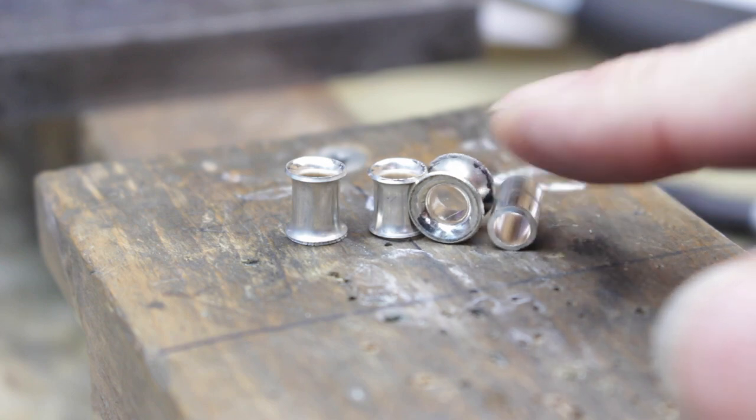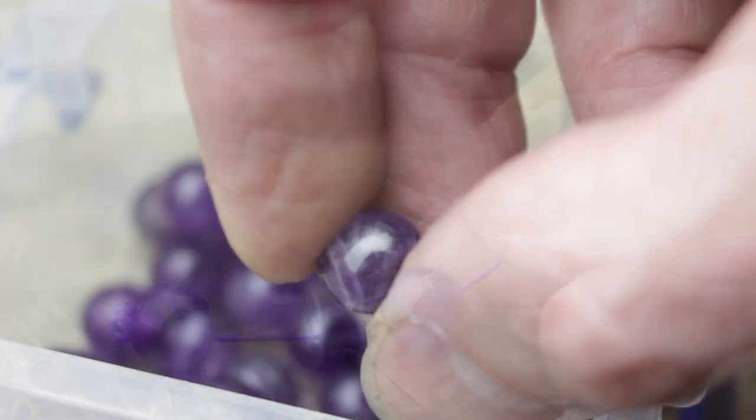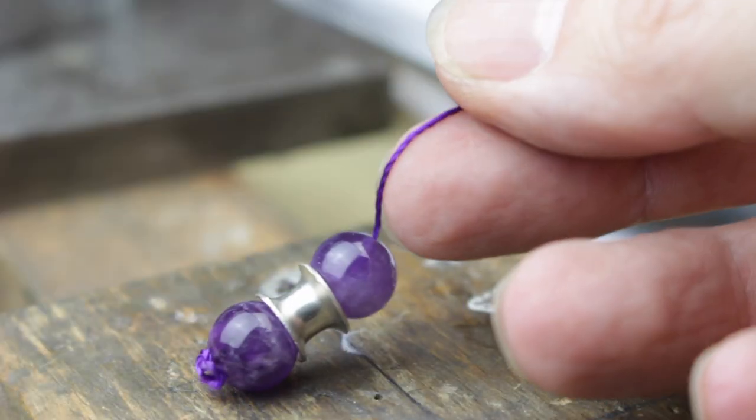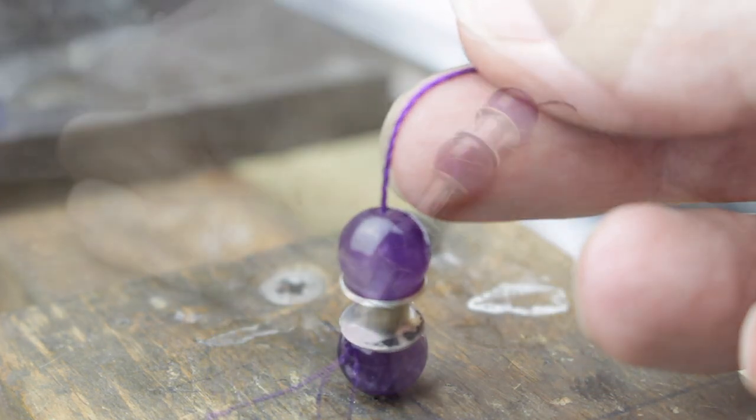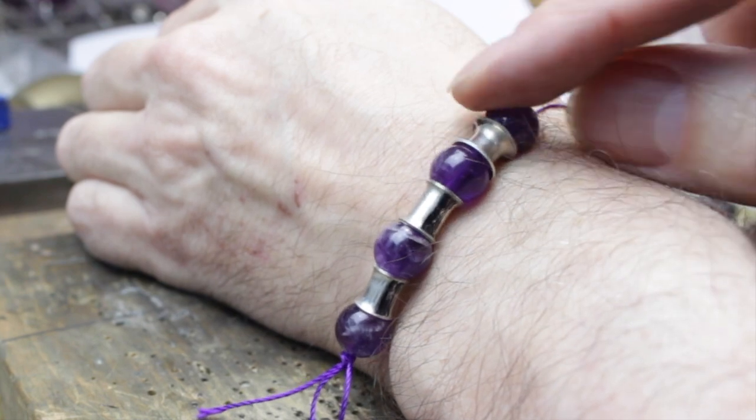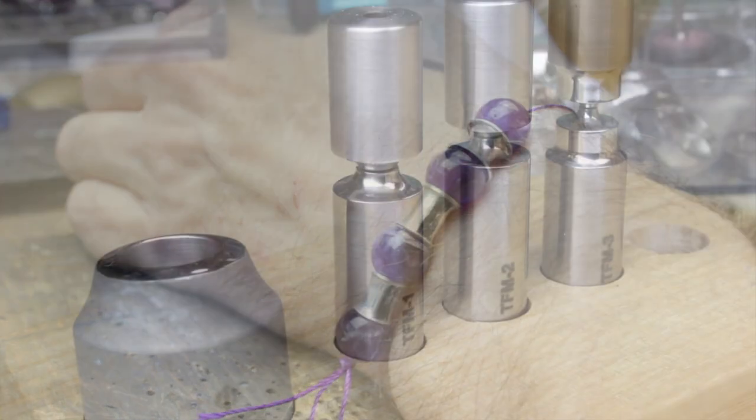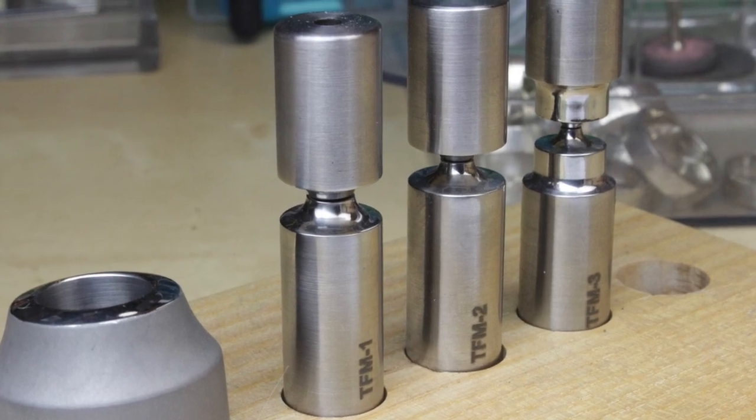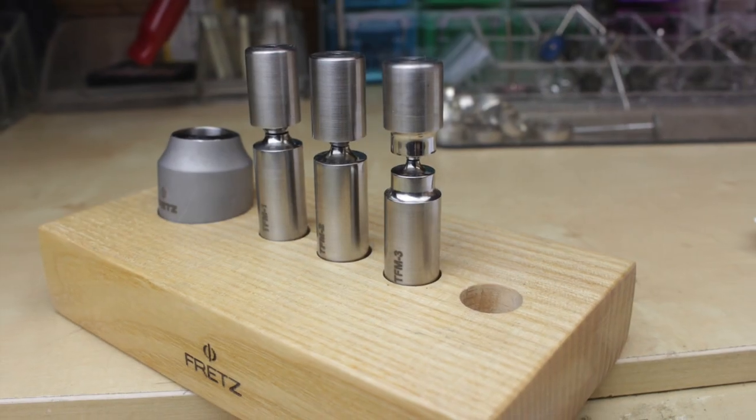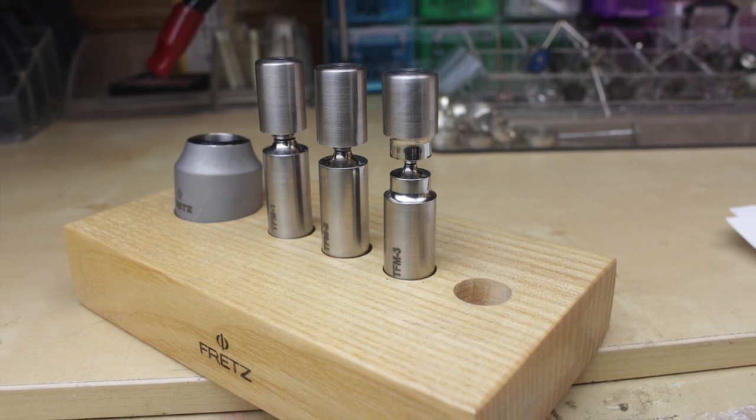So play around with different lengths, thicknesses, and diameters. Try mixing them with soldered jump rings and wire, possibly even making little tiny spinner beads. There are so many possibilities. I hope I've inspired you. Check out pepetools.com for the latest deals on this and other FRET's tools. I've been Dave Wilson. Thanks for watching and I'll see you real soon on the next video. Bye for now.